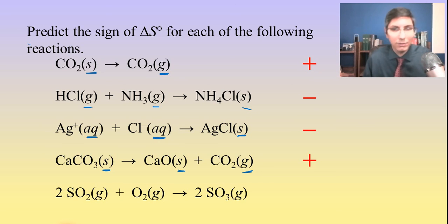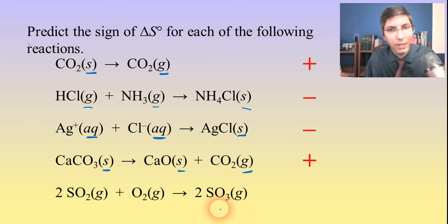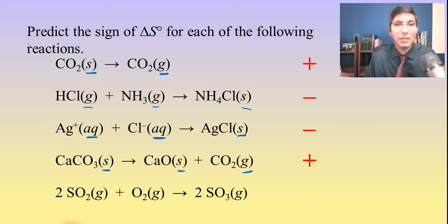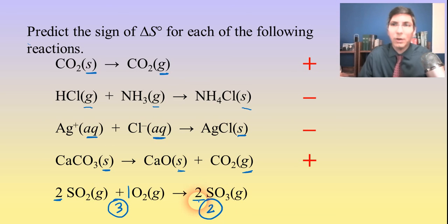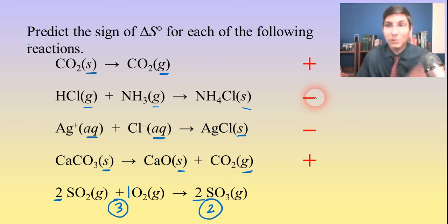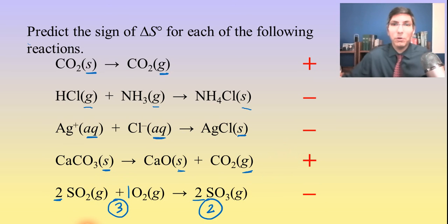One more example: 2 SO₂(g) + O₂(g) → 2 SO₃(g). Both sides are gases, so it's a tie on state of matter — we count particles. On the reactant side: two SO₂ molecules plus one O₂ molecule equals three molecules. On the product side: two SO₃ molecules. Going from three down to two is a drop in particle count, so it's a drop in entropy — delta S is negative.